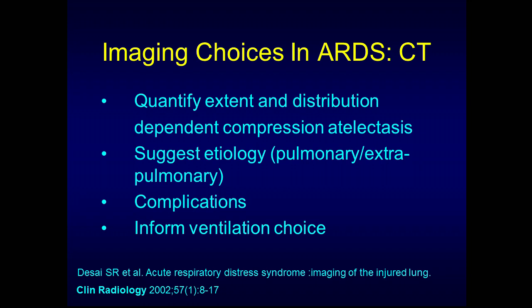CT is obviously a more sensitive tool. We can use it over and above chest X-rays to quantify the exact distribution of any disease, the more precise extent of disease, and in particular look at which areas have compression atelectasis and how much. We can also use CT broadly to help suggest whether the etiology of the ARDS may be pulmonary or extra-pulmonary, although all the trials have shown that's not an absolute indicator on a per-patient basis.